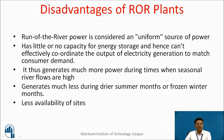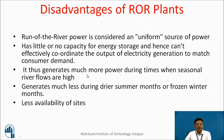There are some disadvantages of runoff river plants. The runoff river plant is considered a non-uniform source of power. It has little or no capacity for energy storage and hence cannot effectively coordinate electricity generation output to match consumer demand. These plants are not as flexible as storage plants because their storage is limited and they largely depend upon the runoff of the river. They generate much more power during times when the river has high flows, but much less power during drier summer months.